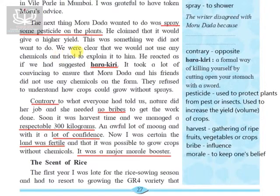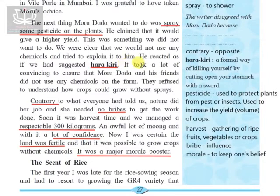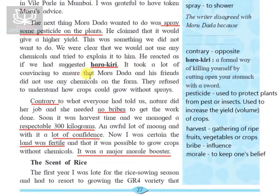Harakiri is a formal way of killing yourself by cutting open your stomach with a sword. Here, Morudada meant that not using pesticides was like committing harakiri for the plants — that insects would eat the plants or they would not grow as well. It took a lot of convincing to ensure that Morudada and his friends did not use any chemicals on the farm. They refused to understand how crops could grow without pesticides.